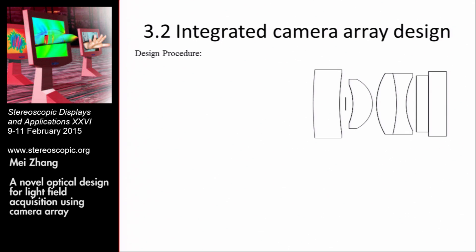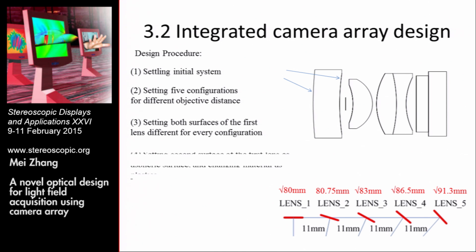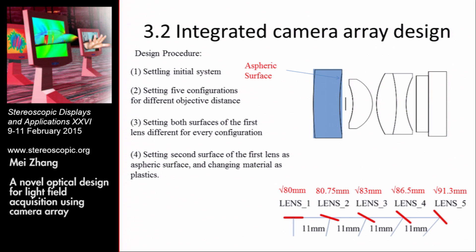Therefore, we proposed an integrated camera array design to achieve the same magnification across all cameras. The detailed design method is as follows: first, we set the objective and optical system just designed as the initial system in the software. Second, we set five configurations for different objective distances to match the requirements. Third, we set both surfaces of the first lens differently for every configuration while maintaining the rest of the structure. Then we set the second surface of the first lens as a spherical surface and change the material to plastic. Finally, we make optimization with a unified image size for the whole system.